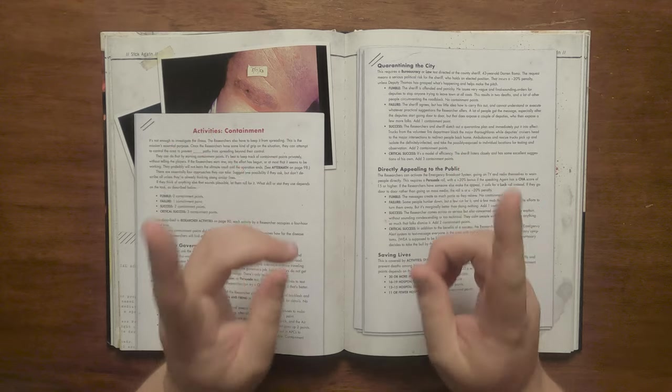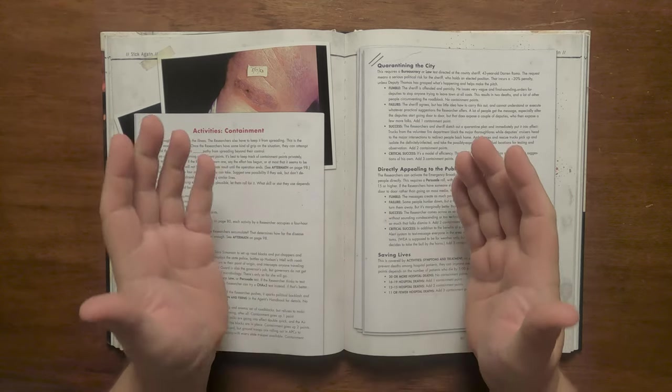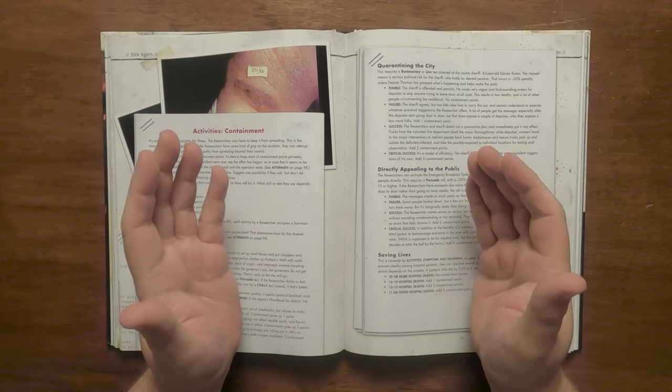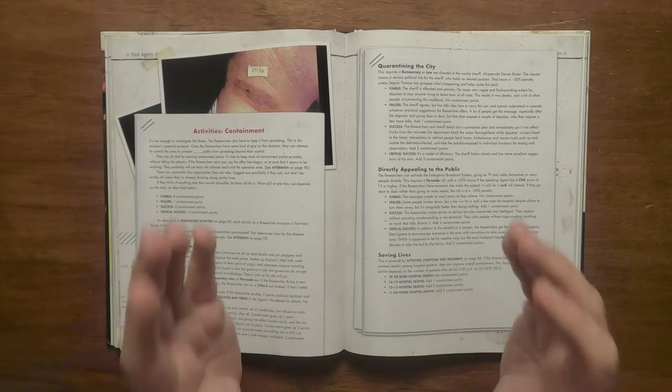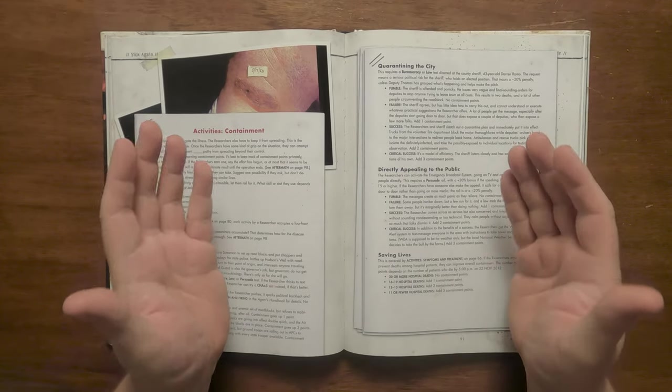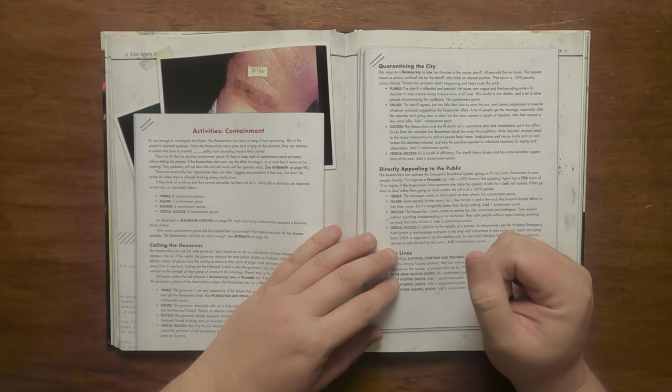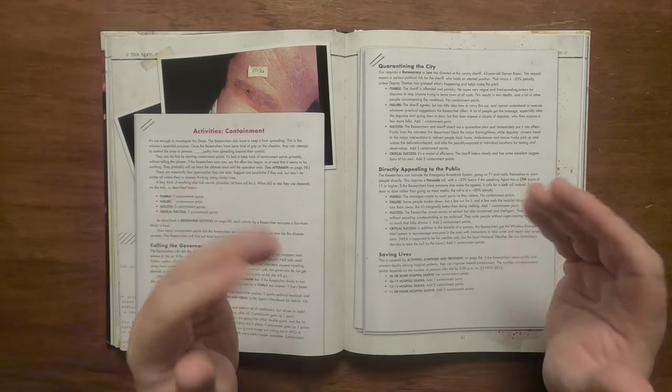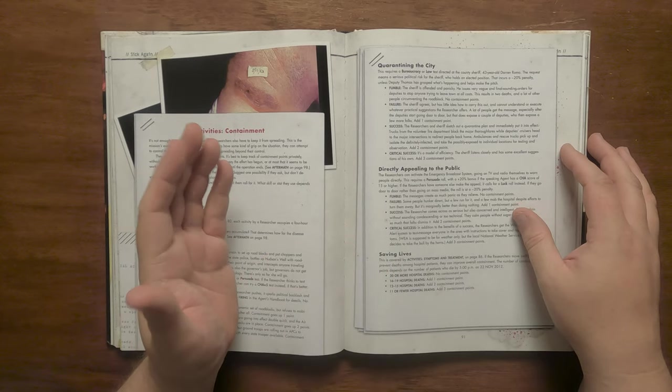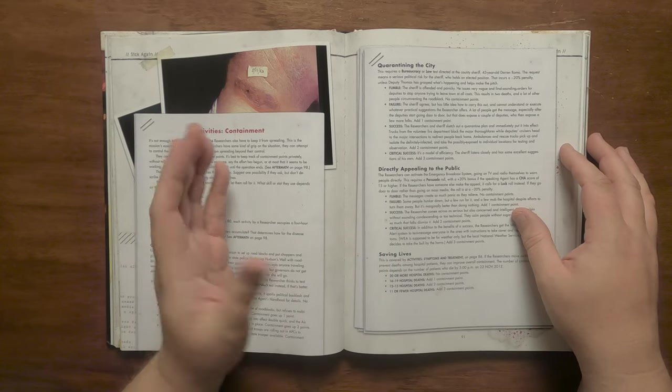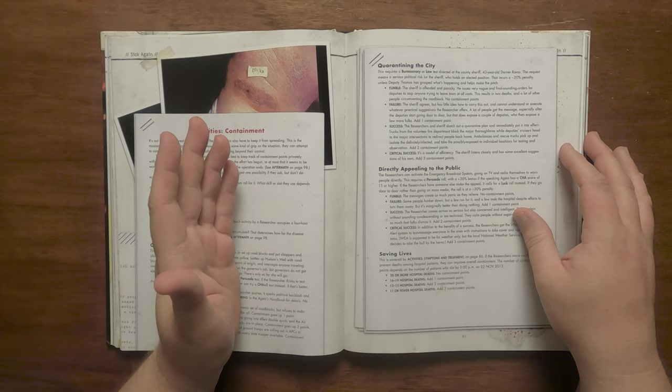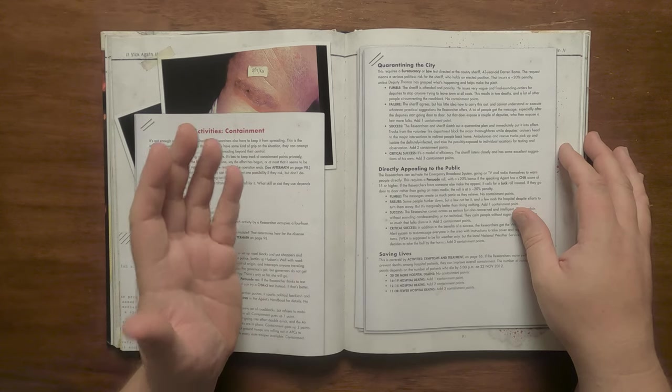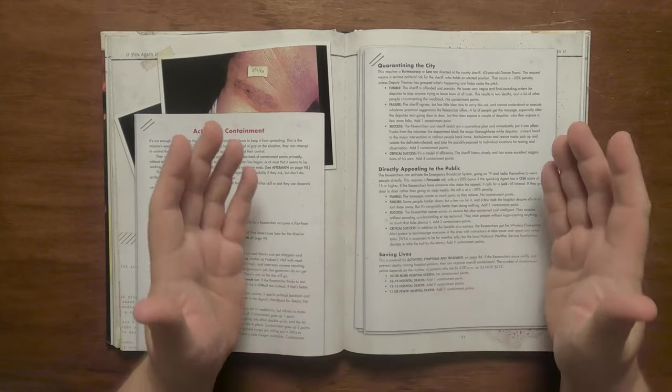The results will range from a fumble doing little in the way of a response, with the researchers causing a political backlash if they push it, and could have them being fired, to a critical result in the Air National Guard and troops patrolling the quarantine zone. The next is to quarantine the city. This is the call of the County Sheriff, Darren Remo. It has a political risk for him as the position is elected, and he will be out of penalty unless they have Deputy Thomas helping them make their case. A fumble will result in offence and panic, and has him issuing vague, confusing orders, which results in two people dying and people circumventing roadblocks, to a critical which has him listening carefully and being incredibly efficient.